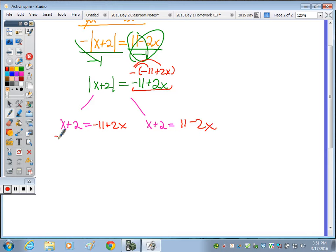I'm going to subtract x. So 2 equals negative 11 plus x. Add the 11, and 13 equals x.